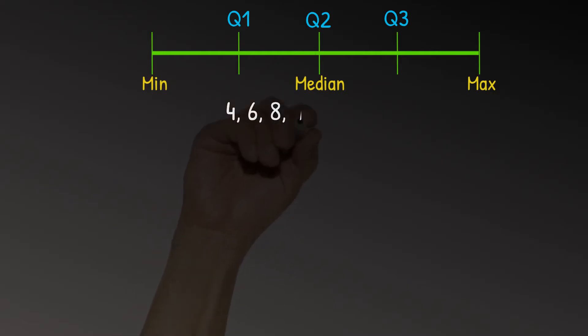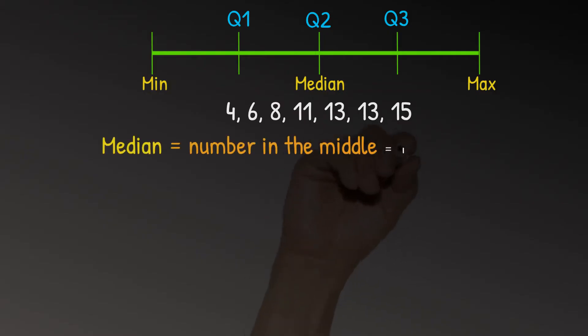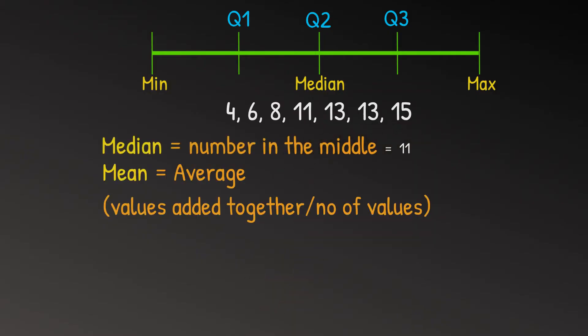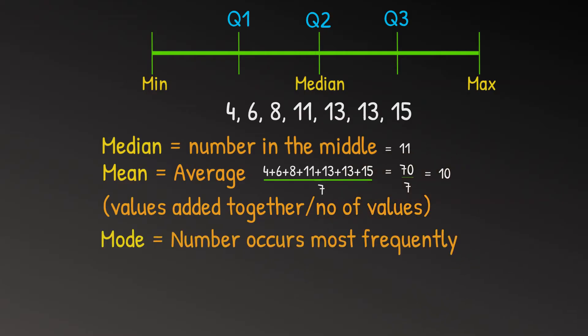Don't forget that all the values in your data set have to be in numerical order. So for this data set, the median or the number in the middle is equal to 11. The mean or the average is all the numbers added together divided by the number of them, which is 70 divided by 7, which is equal to 10. The mode is the number that occurs most frequently, which in this case is 13, because there's two 13s. And the range is the maximum number minus the minimum number, which for this data set is 15 minus 4, which is equal to 11.